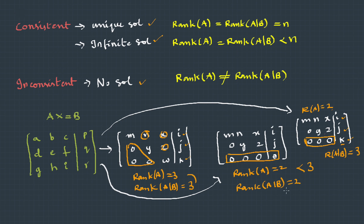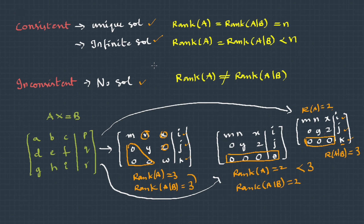The basic approach is to apply row transformations until you reach one of these three possibilities, and accordingly determine whether the system is consistent or inconsistent. If it is consistent, check for unique or infinite solutions. Let's start with the numericals.